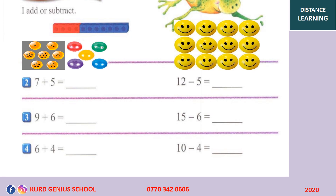We have subtraction and addition as well. The first examples we do the additions; the second ones are subtraction. We have 7 plus 5. Look at these balls.